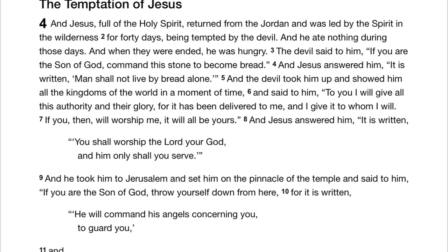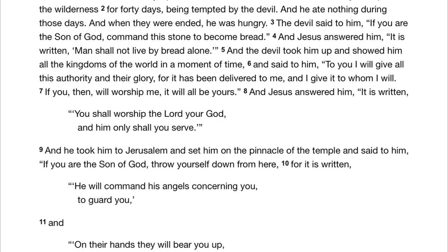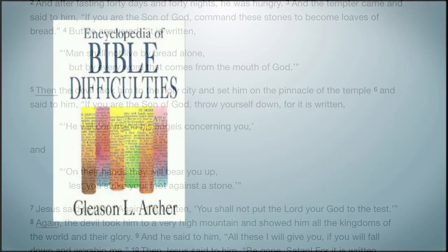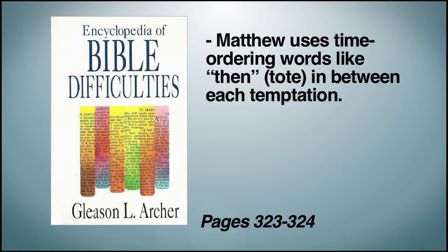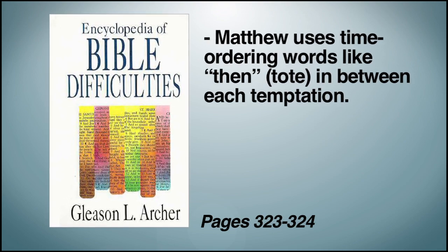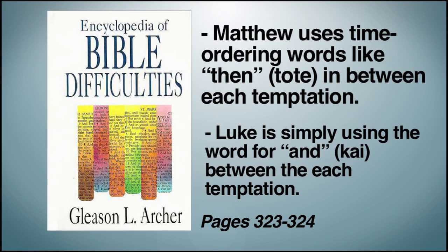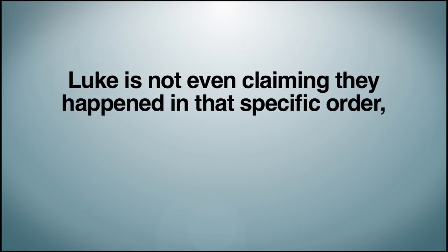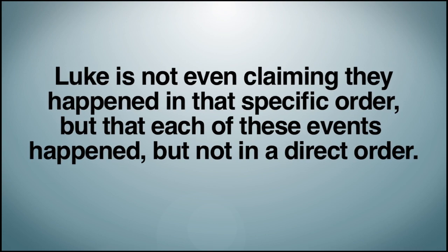And if you look at the actual words Matthew and Luke use, we can see that Luke seems to have arranged it topically, and Matthew has arranged it chronologically. In the Encyclopedia of Bible Difficulties, Gleason Archer notes Matthew uses time-ordering words like 'then' in between each temptation, whereas Luke simply uses the word 'and.' So Luke is not even claiming they happened in a specific order, but that each of these events happened, but not in a direct order like Matthew says.